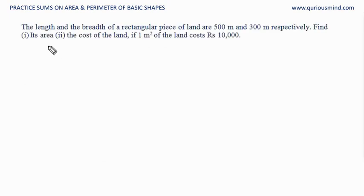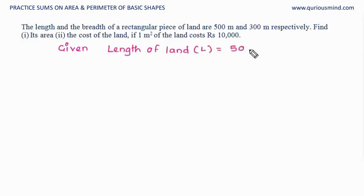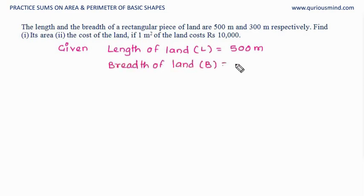Let's write the givens. Length of the land is 500 meters and breadth is 300 meters. We know area of a rectangle is length into breadth.